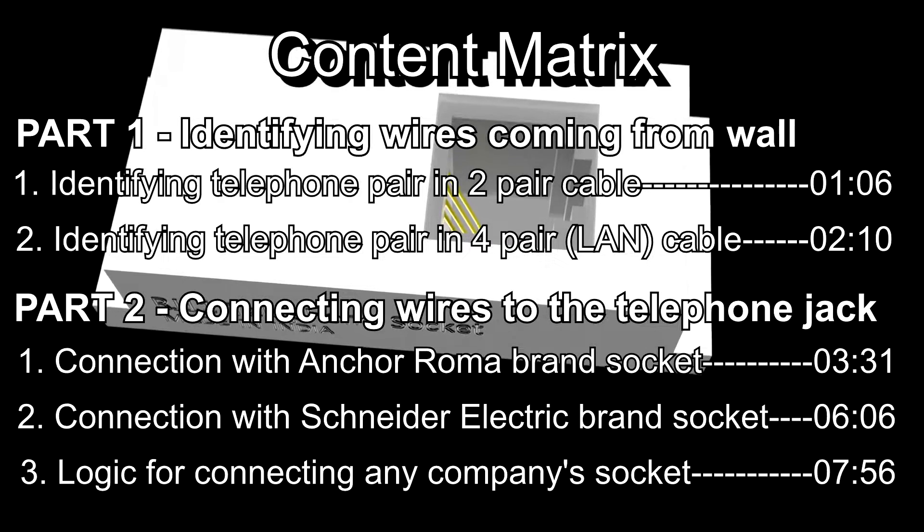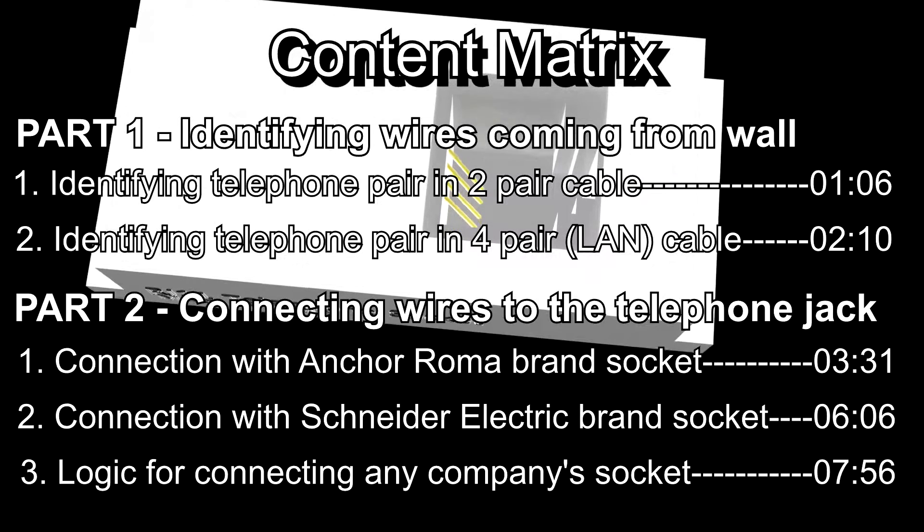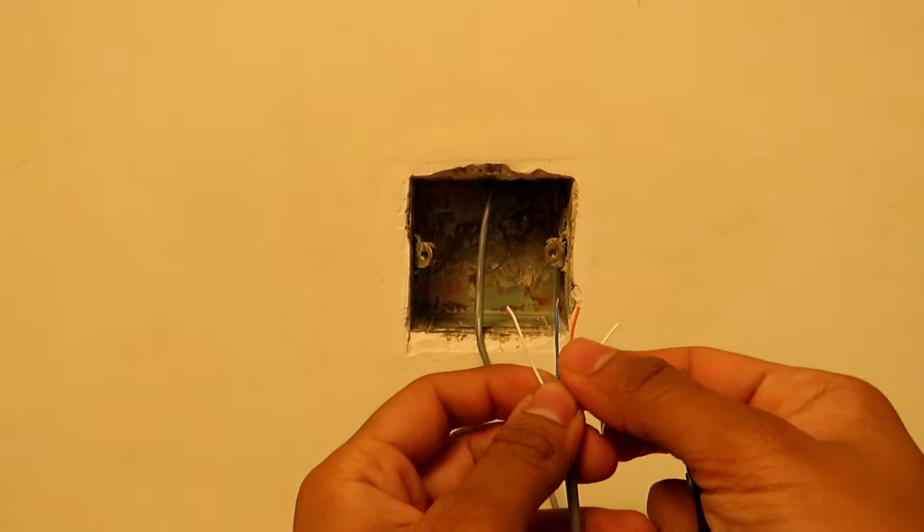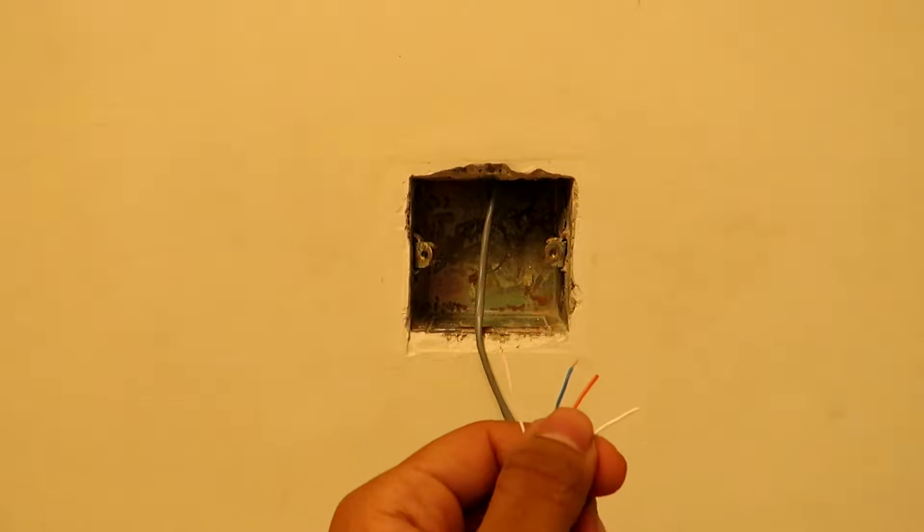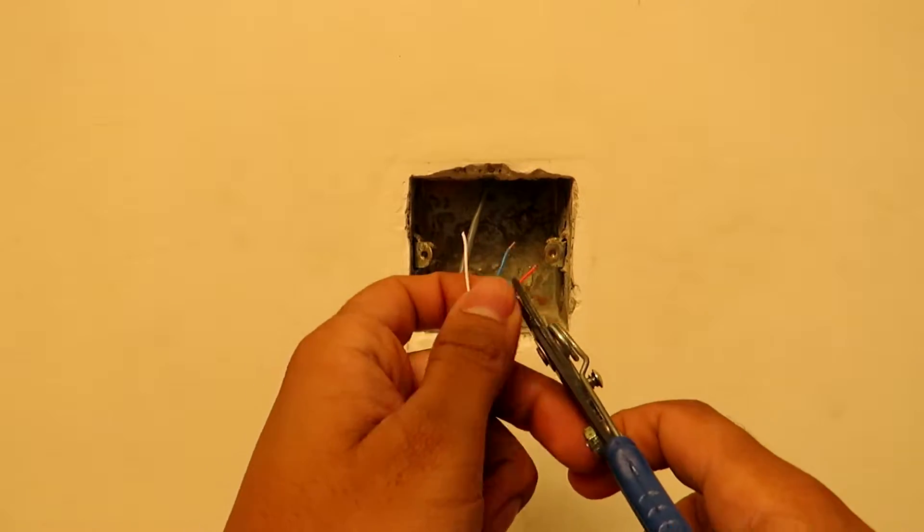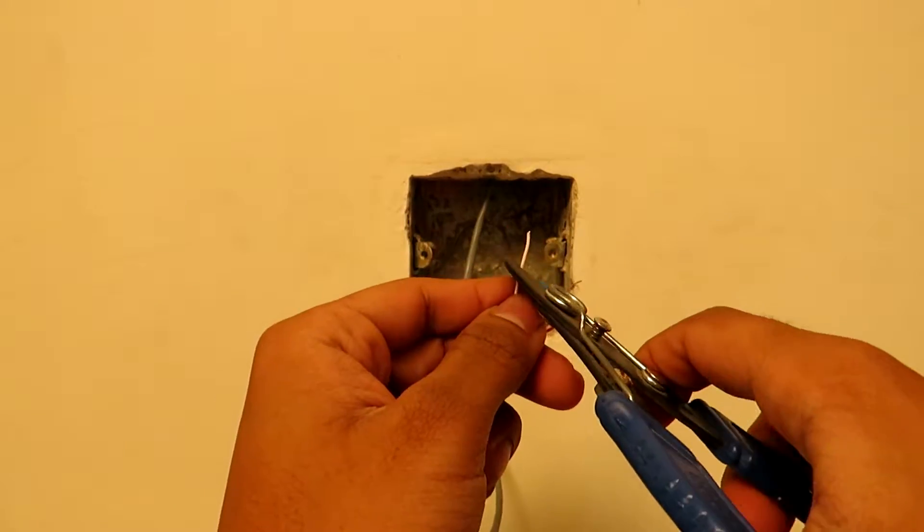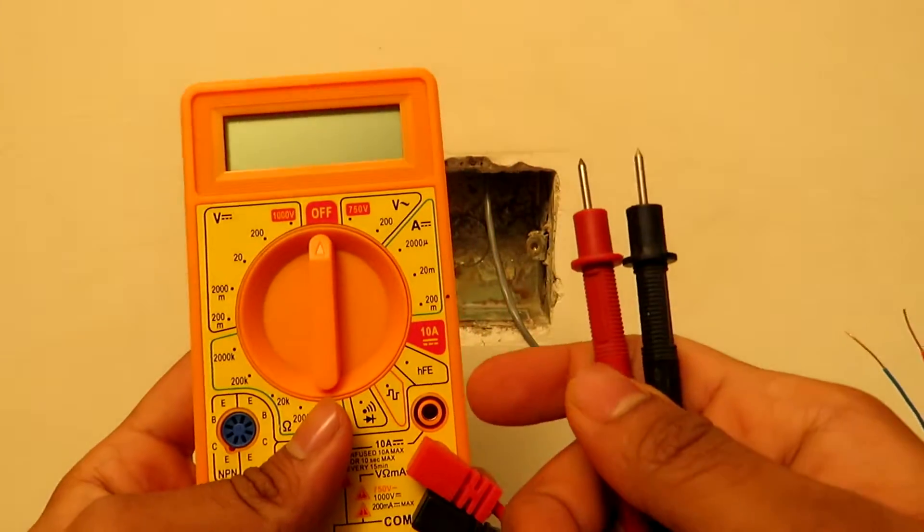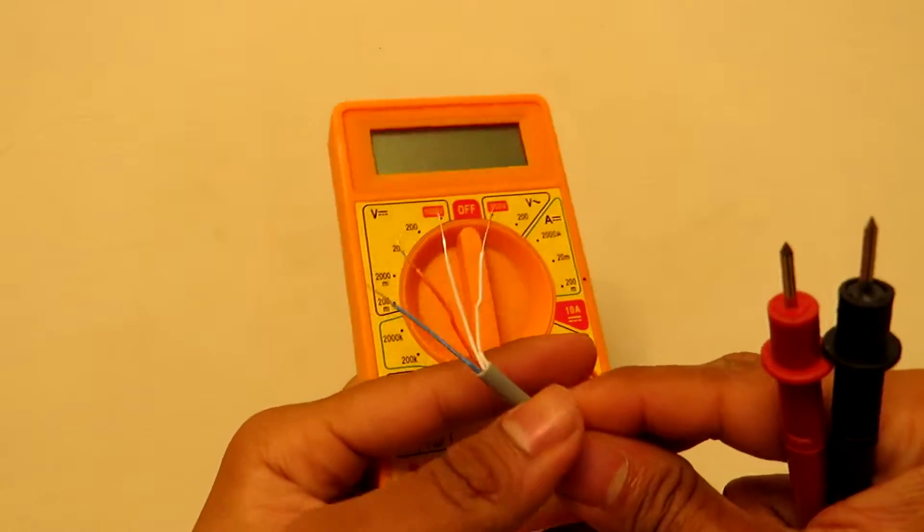To start off, for identifying the correct telephone wires in a two pair cable, that is a four wire cable, you will need a voltmeter. Firstly, skin all the four wires which are visible coming from the wall. Put the multimeter in DC one decimal digit mode, or in simple words put it to the 200 option of DC.